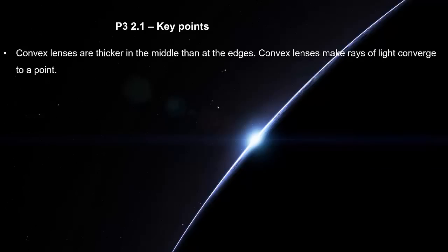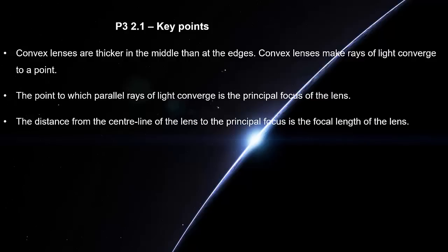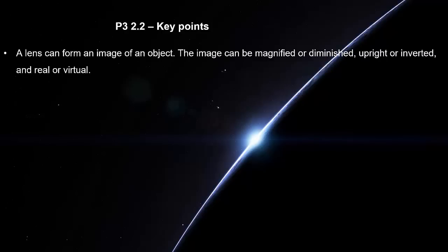Convex lenses are thicker in the middle than at the edges. Convex lenses make rays of light converge to a point. The point to which parallel rays of light converge is the principal focus of the lens. The distance from the center line of the lens to the principal focus is the focal length of the lens. A lens can form an image of an object. The image can be magnified or diminished, upright or inverted, and real or virtual.